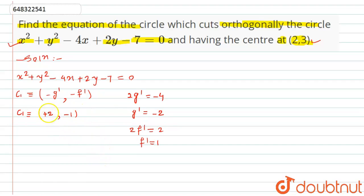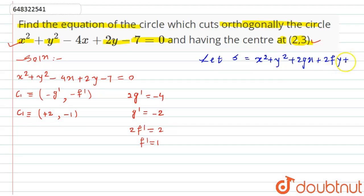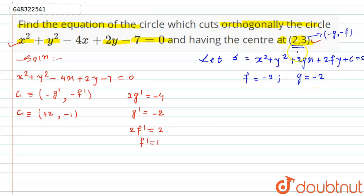Now let the required circle equation be x² + y² + 2gx + 2fy + c = 0. We need to find the constants g, f, and c. Since the center of the required circle is (2, 3), and the center is given by (-g, -f), we get g = -2 and f = -3.